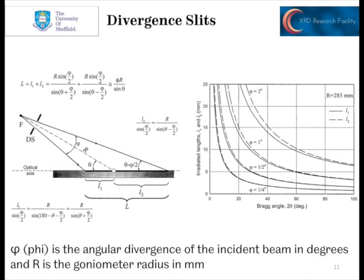The take-home message is that if you have a peak at 20 degrees 2-theta, most machines have a 1-degree divergence slit. At 20 degrees, L2 would be about 15 millimetres and L1 about 13 millimetres, so the total X-ray footprint from left to right across the machine would be around 28 millimetres. That explains why we need such big samples for X-ray diffraction. If you have a very small sample, you could decrease the slit size — moving to half a degree slits, the total illuminated area drops to around 14–15 millimetres at 20 degrees 2-theta. But for Bragg-Brentano geometry, bigger is always better in terms of samples.